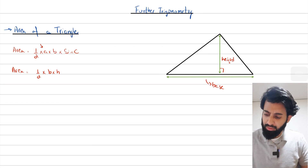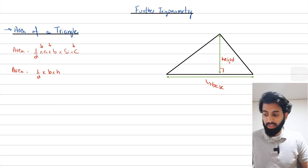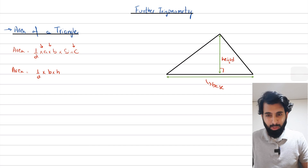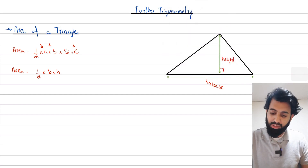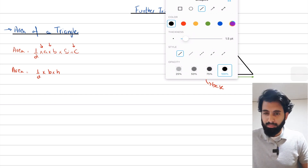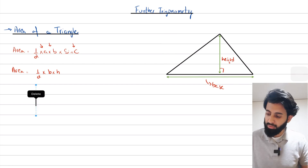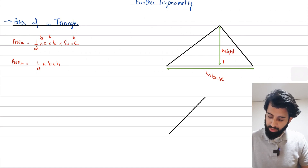Here you can see we have a and b — those are two lengths — and C is an angle. So does that mean we can apply this formula whenever we have two lengths and one angle? Not exactly, because there are a couple of conditions that need to be fulfilled before you can use this formula.